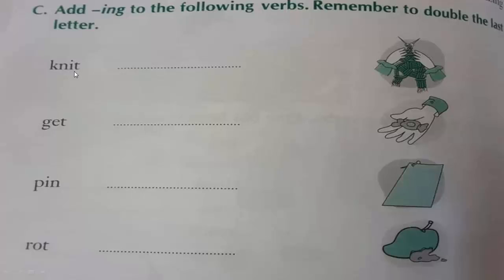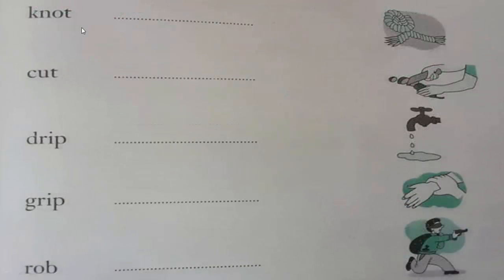Add ing to the following words, remember to double the last letter. 'Knit': consonant, vowel, consonant — last t will be doubled and add ing. 'Gate': consonant, vowel, consonant — last t will be doubled to add ing. 'Pin': consonant, vowel, consonant — last n will be doubled to add ing. 'Rot': consonant, vowel, consonant — last t will be doubled and add ing. 'Knot': consonant, vowel, consonant — last t will be doubled and add ing. 'Cut': consonant, vowel, consonant — last t will be doubled and add ing. 'Drip': consonant, vowel, consonant — last p will be doubled to add ing. 'Grip': consonant, vowel, consonant — last p will be doubled to add ing.